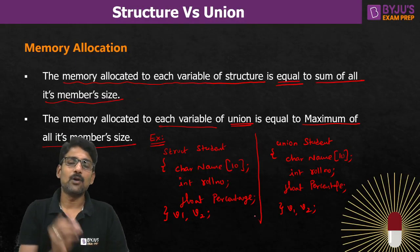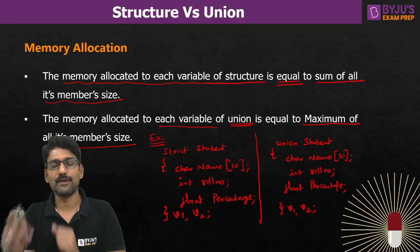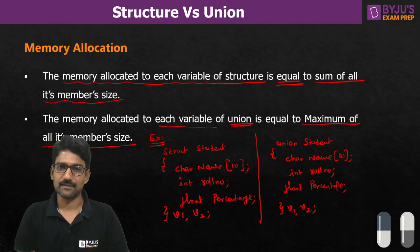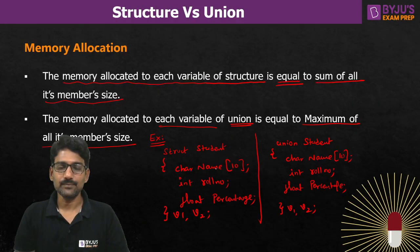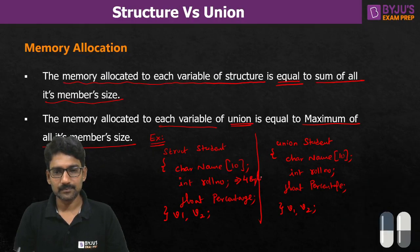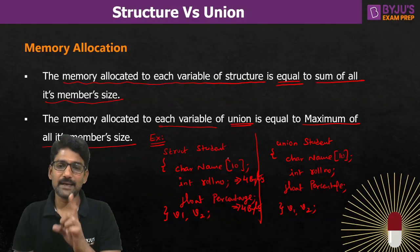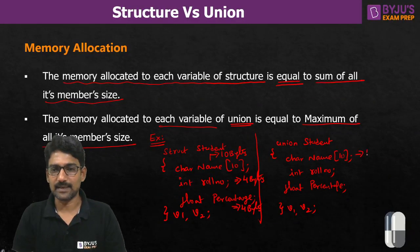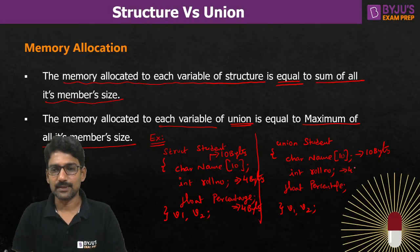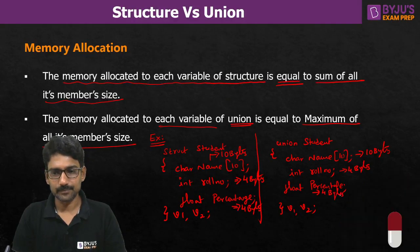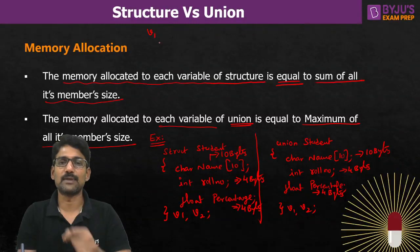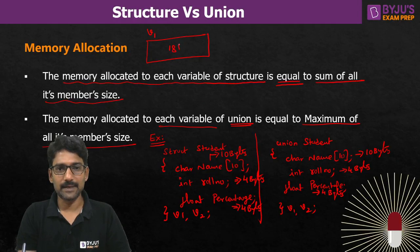How much memory is allocated for v1 and v2 of the structure, versus v1 and v2 of the union? Assuming a 32-bit processor, int size is 4 bytes, float is 4 bytes by default, and one character requires 1 byte so 10 characters require 10 bytes. So the three members have sizes: 10 bytes for char, 4 bytes for int, 4 bytes for float. For a structure variable, v1 gets the sum: 10 + 4 + 4 = 18 bytes.